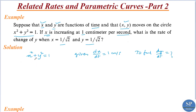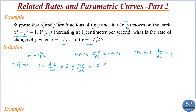We have x squared plus y squared equal to 1. Differentiating this with respect to t, we get 2x dx by dt plus 2y dy by dt equal to 0, because x and y are functions of t. We are given that dx by dt equals 1 centimeter per second and we have to find dy by dt when x equals 1 by root 2 and y equals 1 by root 2.